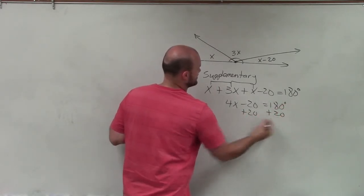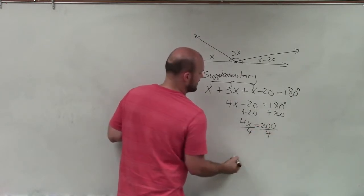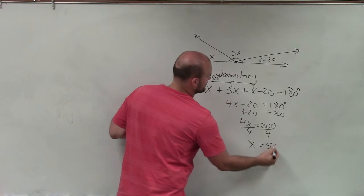Add 20, add 20. 4x equals 200. Divide by 4, divide by 4. x equals 50.